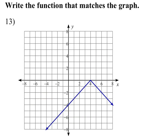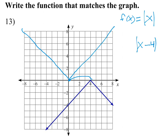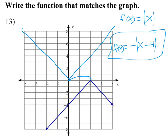Now let's review how to write the function. Be familiar with your basic functions. This one's absolute value, so the original is f(x) = |x|. The vertex has moved right 4, so that gives x minus 4 inside the absolute value. It didn't go up or down, but it did flip over the x-axis, so we put a negative in front. That's our function — the negative flips it, and the subtract 4 inside moves it right 4.